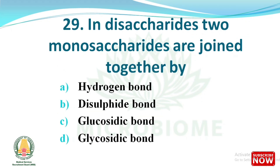Next question: in disaccharides, two monosaccharides are joined together by which of the following? The options are hydrogen bond, disulfide bond, glucosidic bond, and glycosidic bond. The right answer is option D, glycosidic bond.